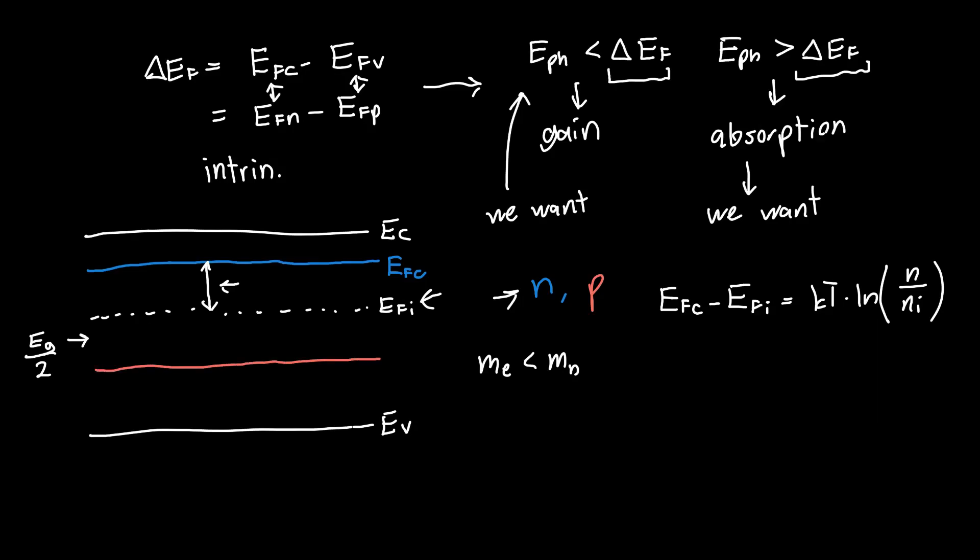And similarly, we can calculate the quasi-Fermi level for holes, or the quasi-Fermi level in the valence band. And this distance here, this EFI minus EFV, we know that this is just equal to kT times the natural log of P over Ni, so of our hole concentration over the intrinsic carrier concentration.